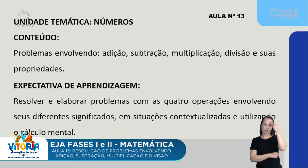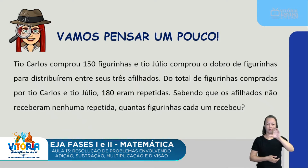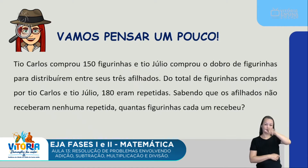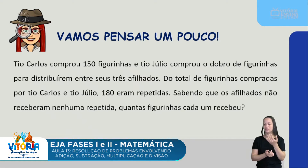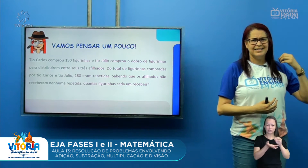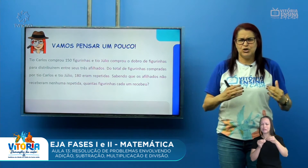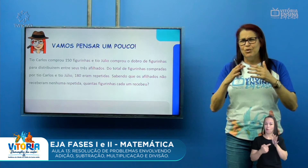Vamos iniciar com um problema para a gente pensar: Tio Carlos comprou 150 figurinhas e Tio Júlio comprou o dobro para distribuírem entre seus três afiliados. Do total de figurinhas compradas por Tio Carlos e Tio Júlio, 180 eram repetidas. Sabendo que os afiliados não receberam nenhuma repetida, quantas figurinhas cada um recebeu? Vem aí a ideia de dobro, de distribuir, de dividir — se eu vou distribuir, vou dividir para um determinado quantitativo de pessoas. Então vem um monte de operações para a gente fazer.